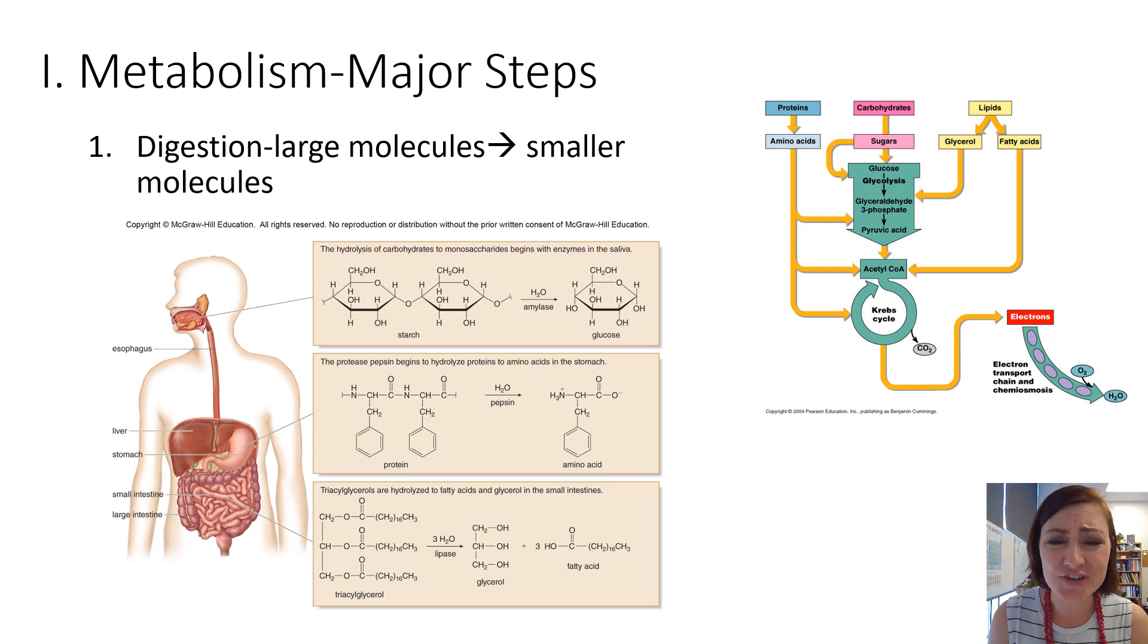And the first is digestion. You're going to have to take in carbohydrates, proteins, and lipids. So you're taking large molecules and breaking them down into smaller molecules. The digestion of carbohydrates, as you may know from your anatomy physiology class, is going to start in the mouth with salivary amylase. Amylase is going to hydrolyze the bonds between your polysaccharide into those individual monosaccharides into glucose.